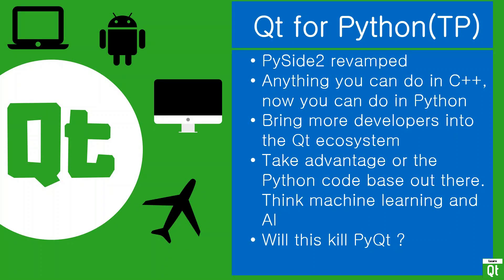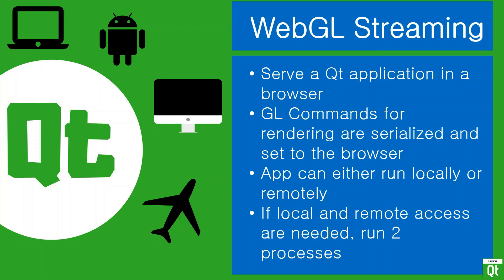Another thing on the table is WebGL Streaming, a technology that allows you to access your Qt applications remotely in the browser. Under the hood, the commands for rendering your application are serialized and sent to the browser to be displayed. This is a very limited way to use Qt applications remotely — it is useful if you are an engineer trying to debug remotely, but it is not meant to be used like a normal web application. If you use WebGL Streaming, your app can only run locally or remotely in one process at a time; if you need both simultaneously, you need to run it in different processes and use inter-process communication between them. So it is not really meant for multiple people — it is a one or two person kind of thing.